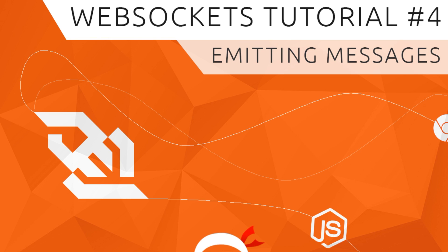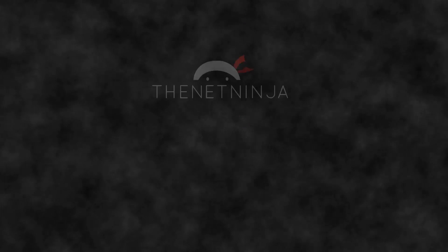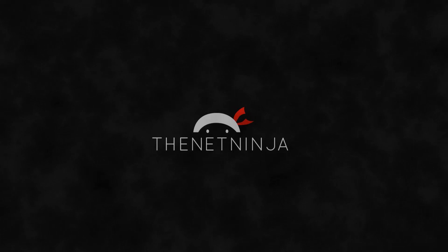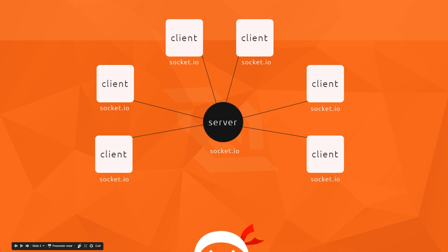Welcome to your fourth WebSockets tutorial. In this video we're finally going to start creating the chat application and start emitting messages using socket.io. In the last tutorial we set up socket.io on both the front end and the server, and when a client browser requests the index page the server sends it, then we set up the WebSocket connection between the two.